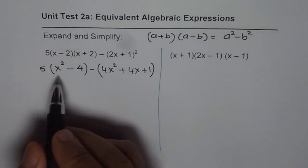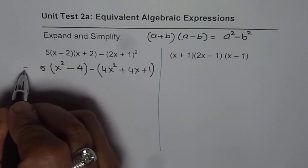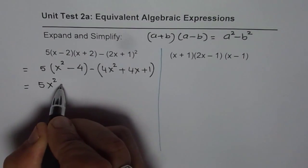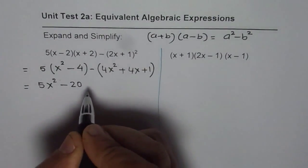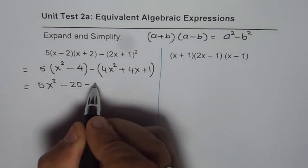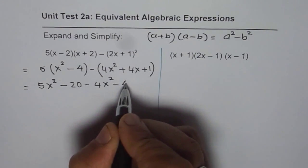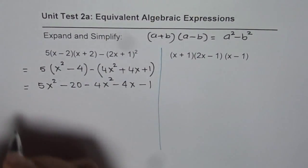Now, the first term is to be multiplied by 5. So, we can write this as equal to 5x² minus 20. When you open the bracket, change all the signs since negative is outside. So, minus 4x² minus 4x minus 1.